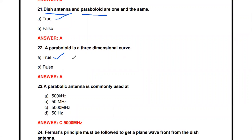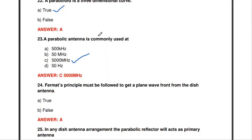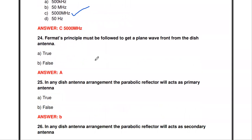Dish antenna and paraboloid are one and the same. A paraboloid is a three-dimensional curve - that is true. A parabola is not a three-dimensional curve, but a paraboloid is a three-dimensional curve. The parabolic antenna is commonly used at which frequency region: 500 Hz, 50 MHz, 5000 MHz, or 50 Hz? The answer is 5000 MHz, as the parabolic antenna is used in the microwave range.